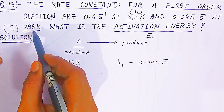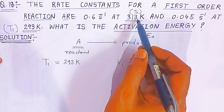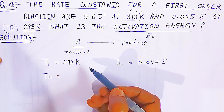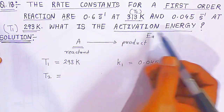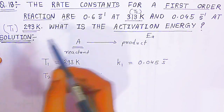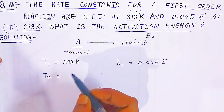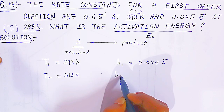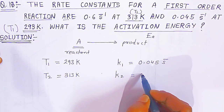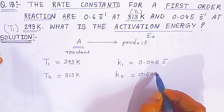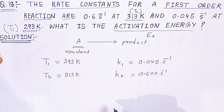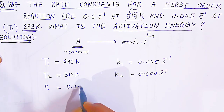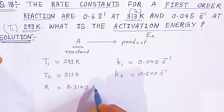When the temperature increases from 293 to 313 kelvin, that is T2. So T2 is 313 kelvin, and at that temperature the rate constant K2 is given as 0.6 second inverse. The universal gas constant R is always taken as 8.314 joule per kelvin per mole. We have to find the activation energy, that is Ea.